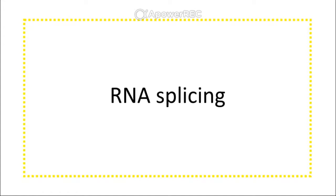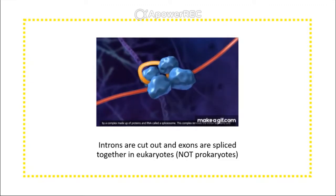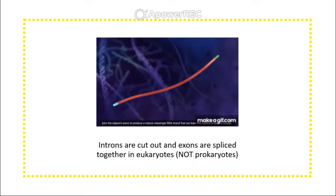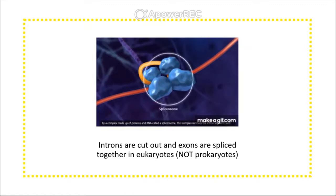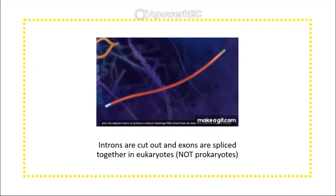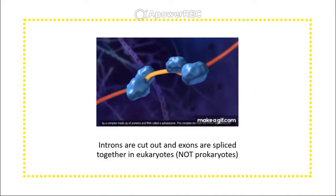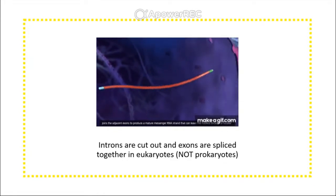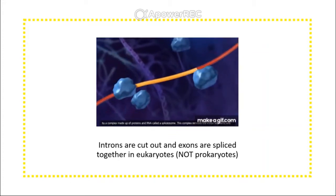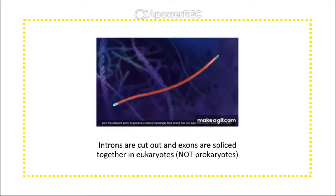RNA splicing is a process that occurs in eukaryotic organisms. After an mRNA is synthesized, before it can exit the nucleus it must be processed. One of these processes is the cutting out of introns and the re-splicing together of exons to make a mature mRNA ready to go to the ribosomes. A helpful memory trick: introns stay inside the nucleus and exons exit the nucleus.